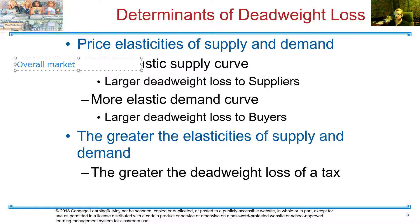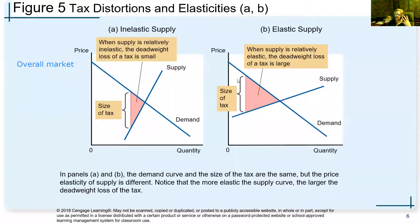Here we're just saying: here's demand, here's supply, this is the amount of the tax. If we have an elastic market — either on demand or supply, or both — we're going to have a greater dead weight loss. This illustrates that concept. In Panel A, we have inelastic supply. So when we shove this tax wedge in, the dead weight loss isn't really all that large.